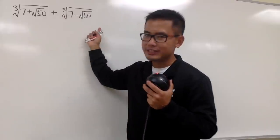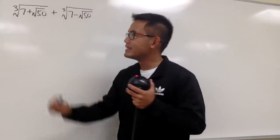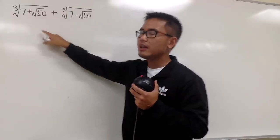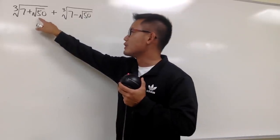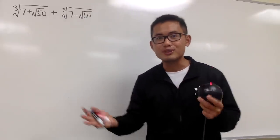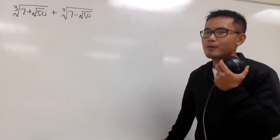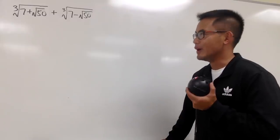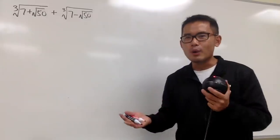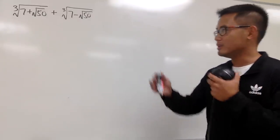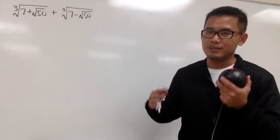As you can see, we have square roots inside of cube roots. Even though we have 7 plus square root of 50 and 7 minus square root of 50, we cannot cancel this out because order of operations says so. So why is this hard? Well, of course, we have the cube roots. Is there a way to get rid of cube roots? If you have one cube root, you can just raise that to a third power to get rid of it.